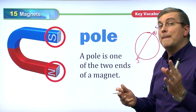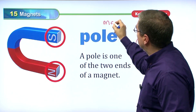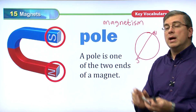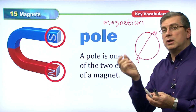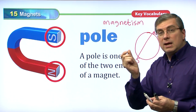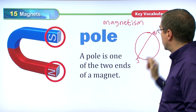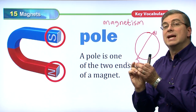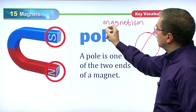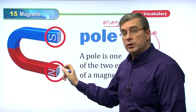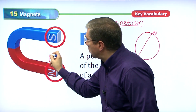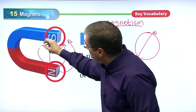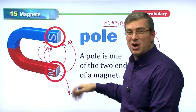The force or energy in a magnet is called magnetism. A long time ago — thousands of years ago — people found out that a small piece of iron placed in water would turn and point north. A pole is one of the two ends of a magnet. The energy in a magnet is always flowing from the north to the south.